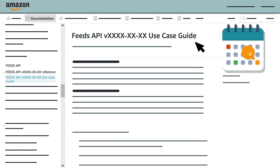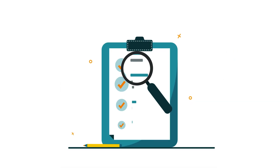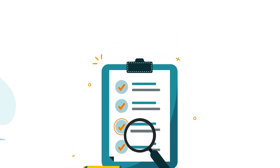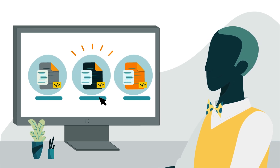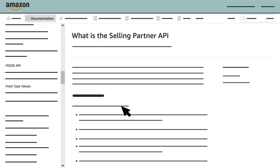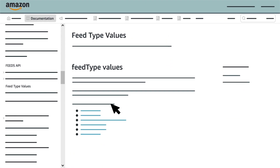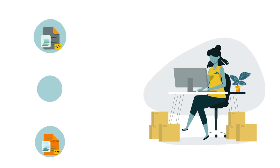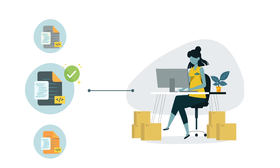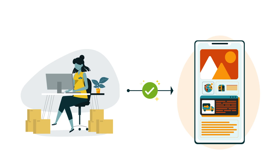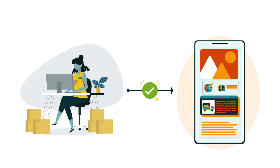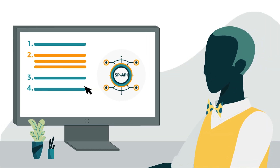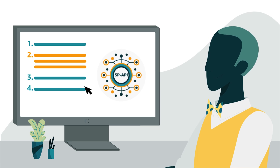Let's start by reviewing a few requirements for submitting a feed to Amazon. Before you begin the process, you'll need to identify a relevant feed type. For a complete list, select the Feed Type Values page from the Table of Contents on the SP API documentation website, then select a feed according to the needs of your seller. Your application will require authorization from your seller before you can submit a feed. If you need more information about the authorization process, refer to the relevant Step 2 video in our series Integrate with SP API.